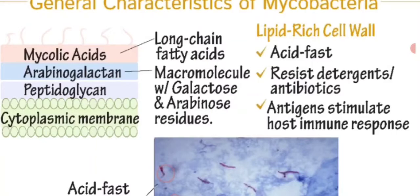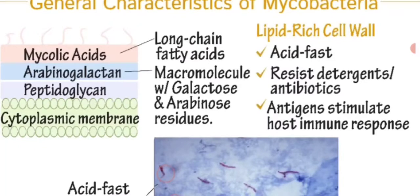Antibiotics can be resisted by these bacteria, and the antigens stimulate the host immune response. Looking at the antigenic structure, you can see different layers. First is the cytoplasmic membrane, above which is the peptidoglycan layer — this maintains shape and rigidity. Above that is the arabinoglycan layer, which is responsible for the survival of the bacteria inside the macrophage.